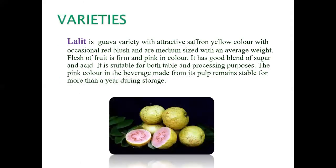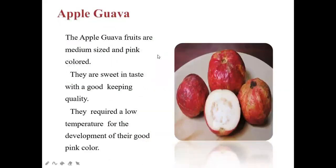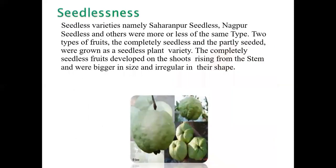There are different varieties of guava — red-fleshed and white-fleshed, seeded as well as seedless. The variety Lalit has saffron-yellow skin and pink flesh, with a good blend of sugar and acid, suitable for both table and processing purposes. Apple guava has pink skin and white flesh, is sweet with good keeping quality, and requires low temperature for development of good pink color.